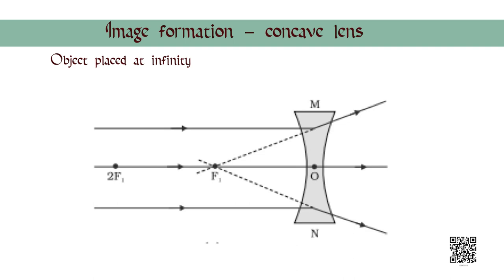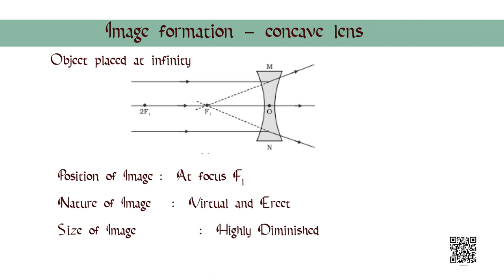First, let us consider an object placed at infinity. An image is formed by either actual or apparent intersection of two or more light rays after refraction through the lens. The rays incident from the object are represented by a pair of rays parallel to the principal axis. After refraction through the lens, these rays appear to meet at focus F1. Since the image is formed due to apparent intersection of light rays, it is virtual and erect. The size of the image is highly diminished or point sized.